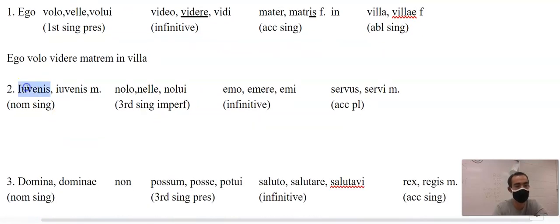Iuvenis, anytime you see nominative singular it's just the first part of a noun. Iuvenis stays the same. It's third singular and imperfect. Imperfect tense needs B-A, and this is going to be nolebat. It's singular, it's third person, it needs a T at the end. Emere, and then servus is second declension masculine, so that's going to be servos, O-S.